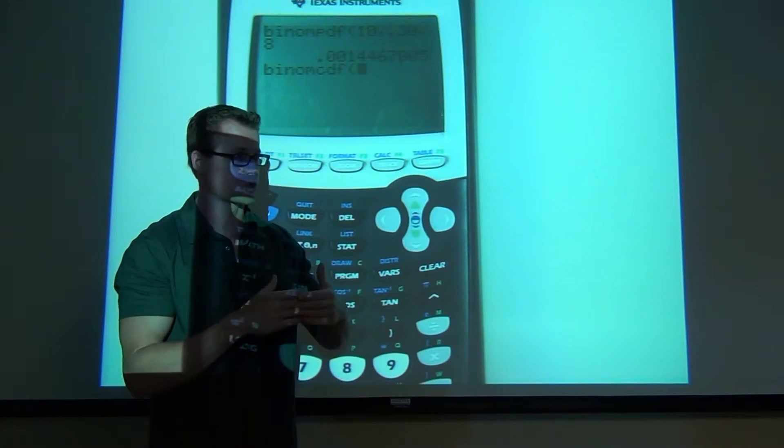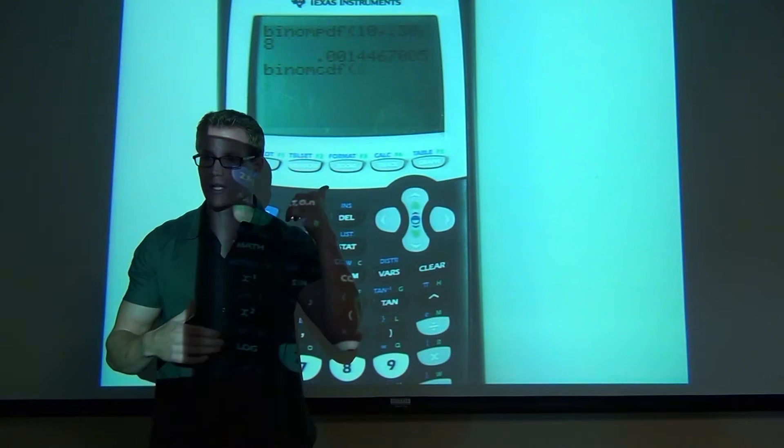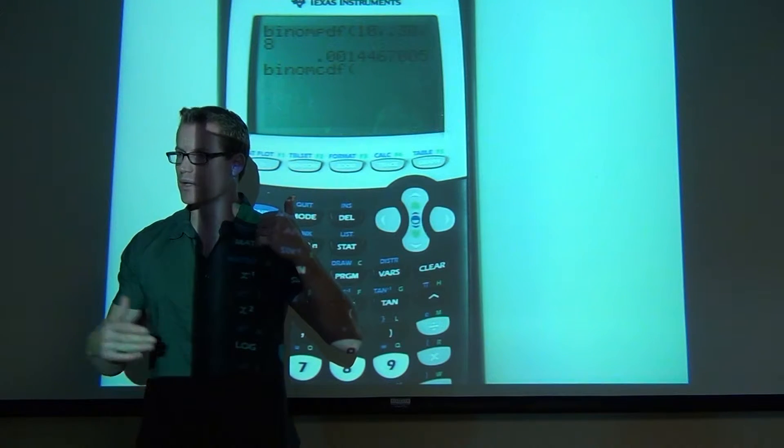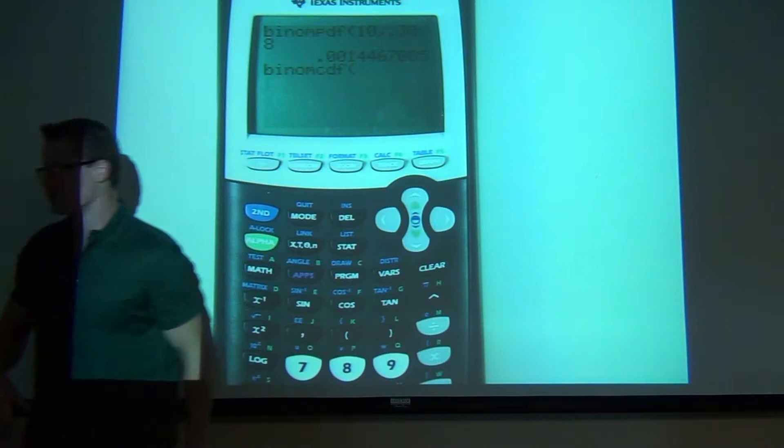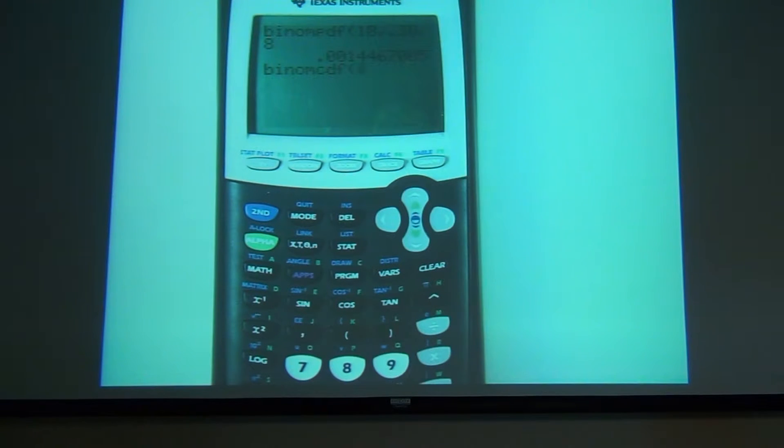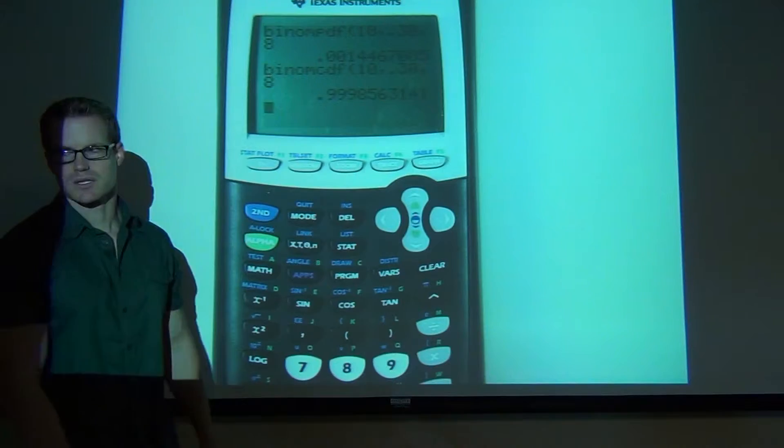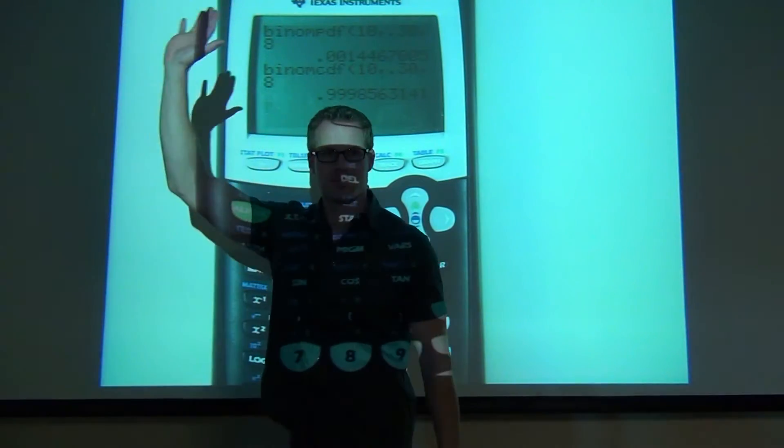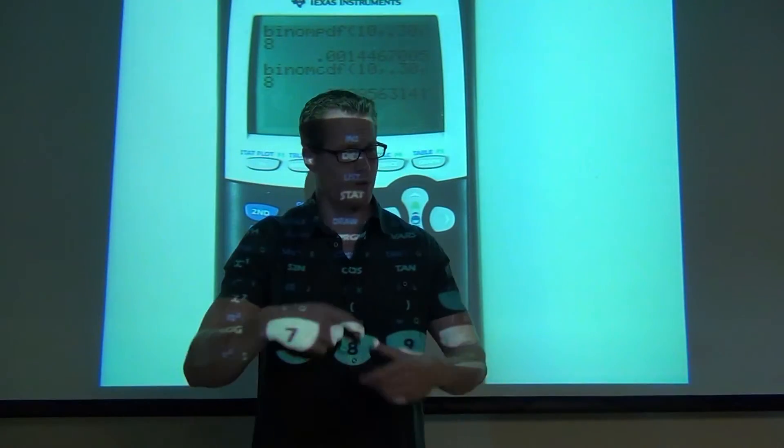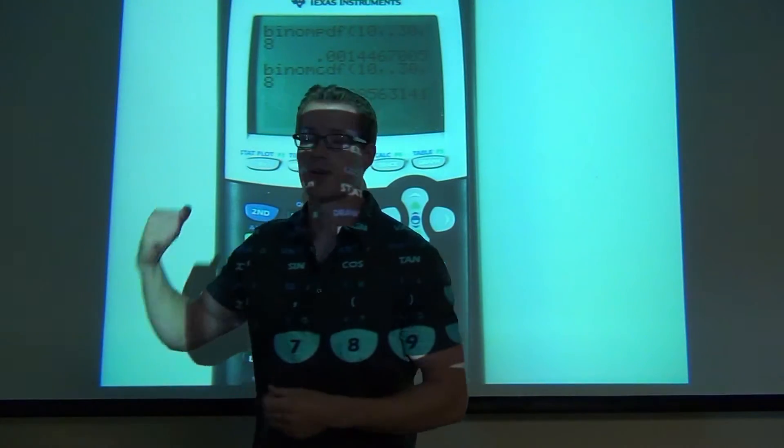You have to be good at knowing whether you're supposed to include that number or not. If you want less than something, you go one less than that number. So we go ten trials. Probability of success is still .30. .99985. That just added everything up for you. And it's more accurate than your table. Watch that video again if you didn't quite catch how to do that on calculator. This is very useful for you.